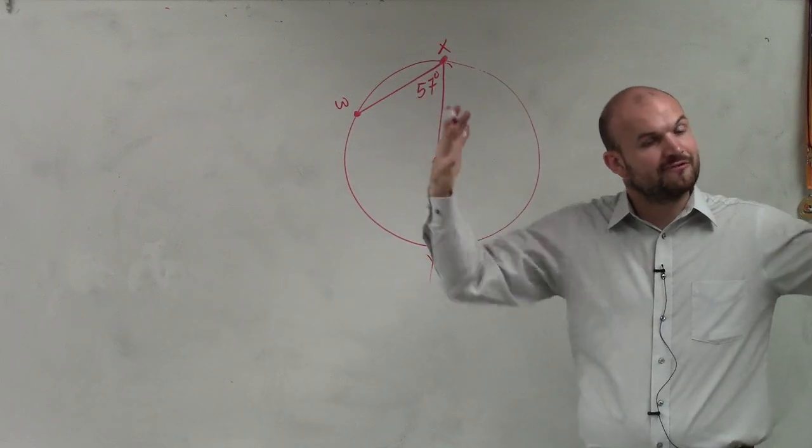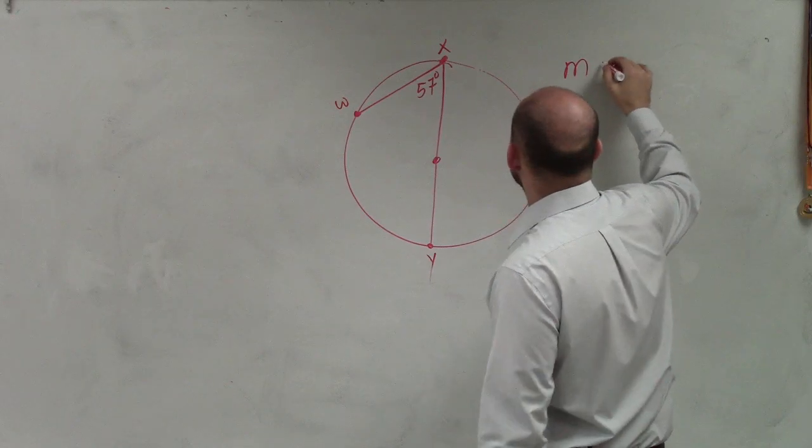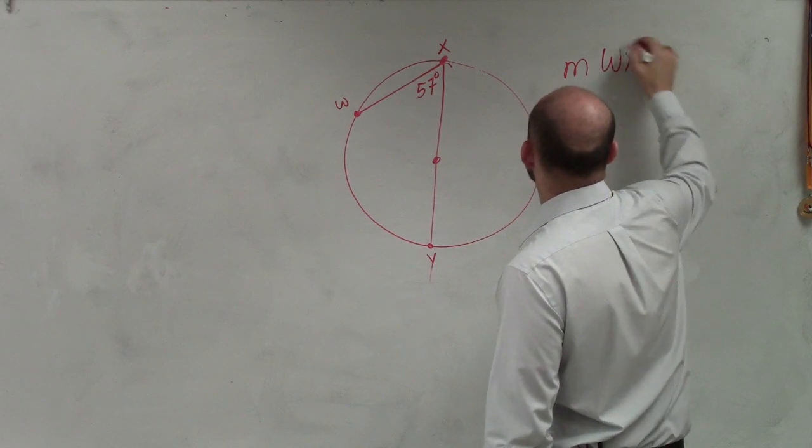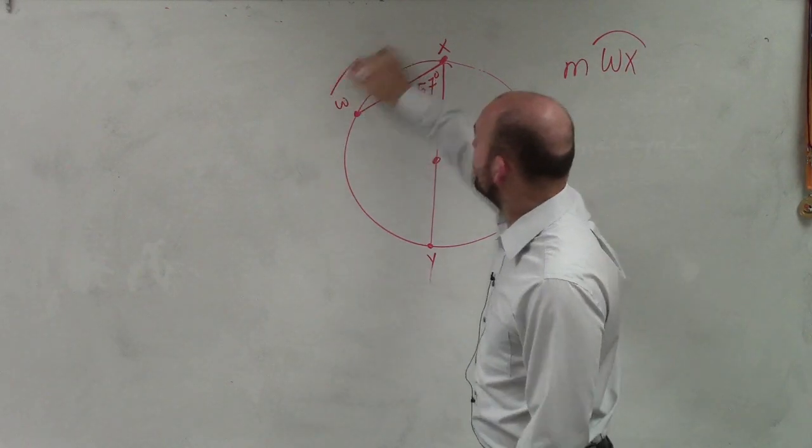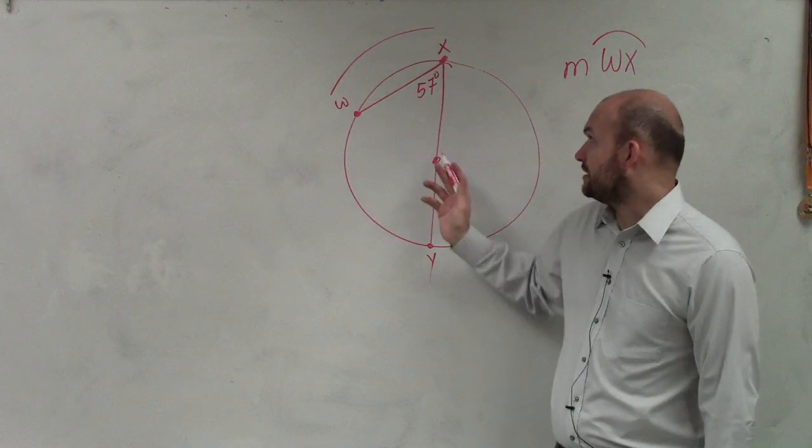Now remember, when we're trying to find the measure of the arcs, they're asking us what is the measure of arc wx. So I need to figure out this arc. I don't have this angle here, the only thing I have is 57.